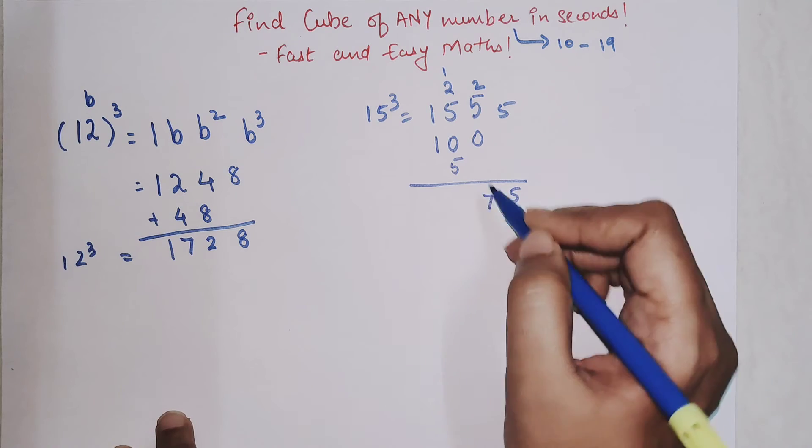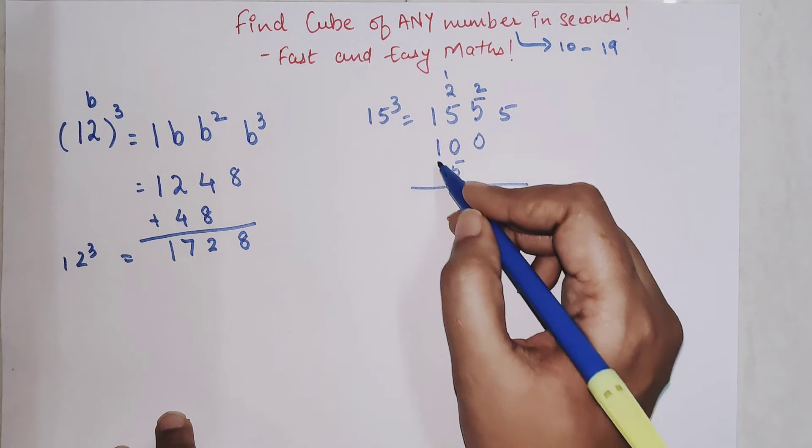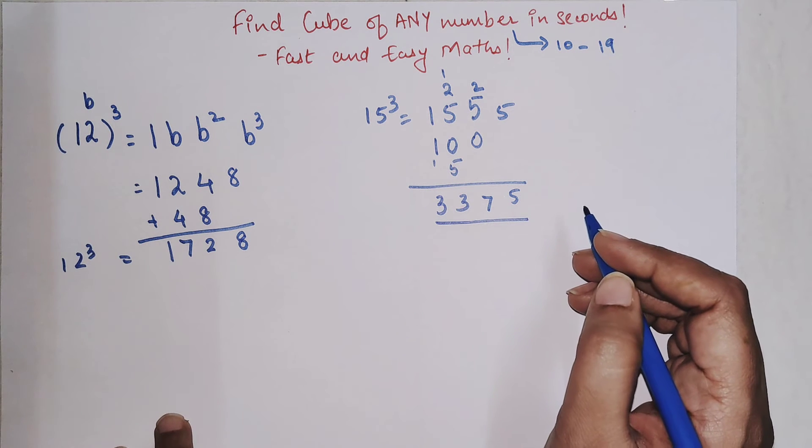So your answer will be five, seven, ten, thirteen, and one. So 3375 is your answer for 15 cube.